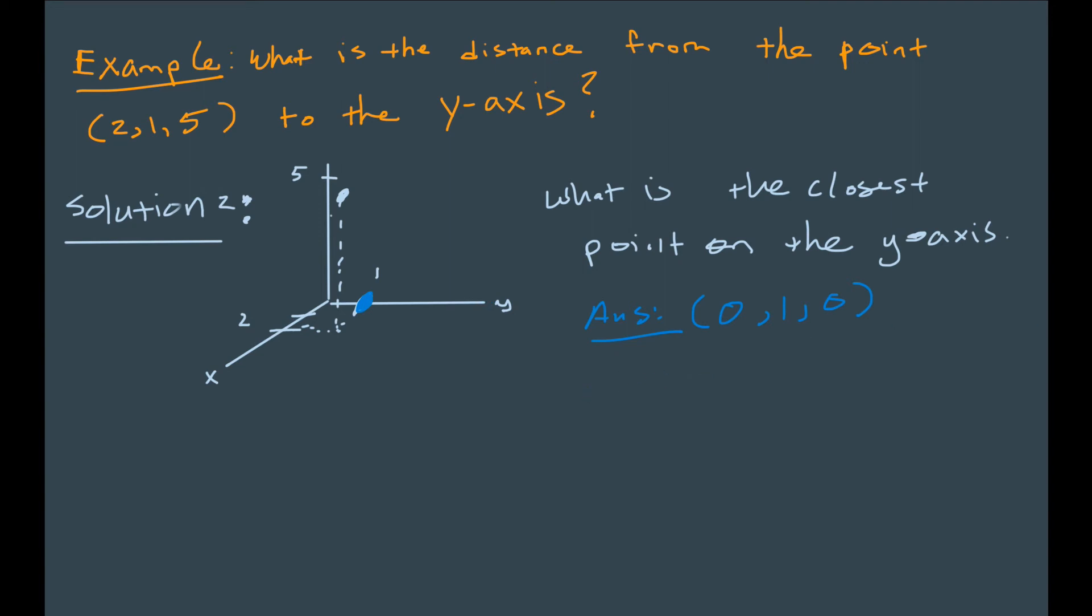So now that we have the closest point, all I have to do to find the distance between my point 2,1,5, and this point 0,1,0 is use the distance formula. So if we use the distance formula, we get that d should be the square root of, then we'll take this point up here, 2,1,5, to be our x1, y1, z1. So we'll do 2 minus 0 squared plus 1 minus 1 squared plus 5 minus 0 squared. Which is going to be the square root of 4 plus 25, just like we got before, the square root of 29. So the same answer.